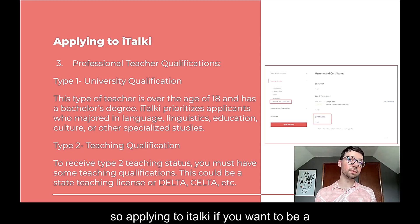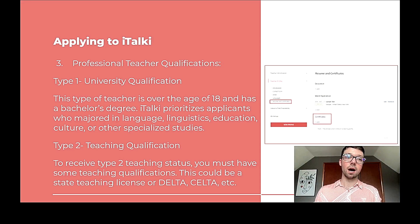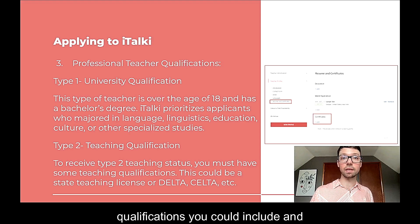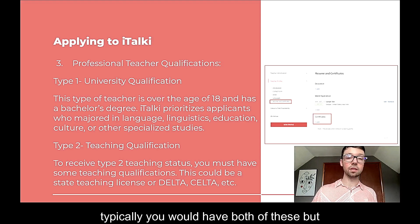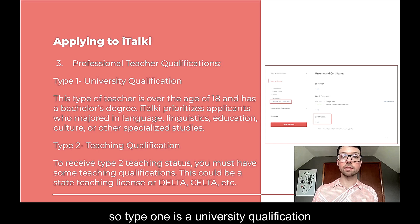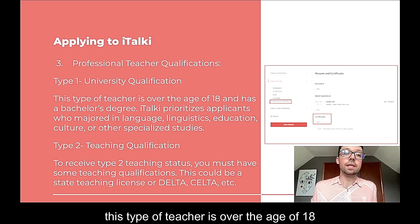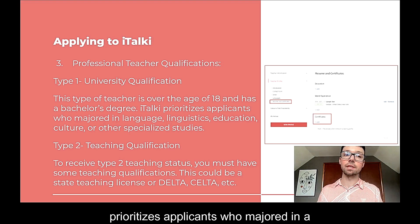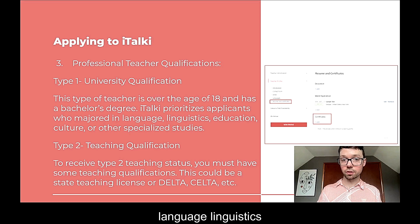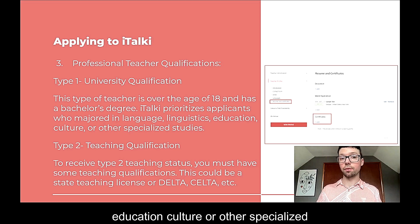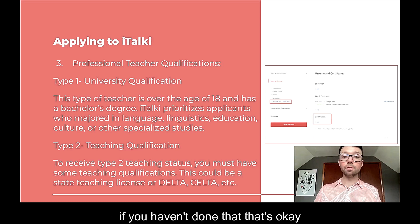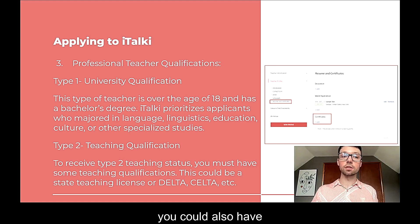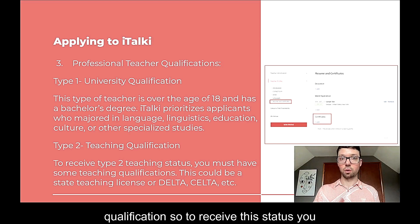If you want to be a professional teacher, there are two types of qualifications you can include — and typically you would have both. Type one is a university qualification: you're over 18 with a bachelor's degree. iTalki prioritizes applicants who majored in a language, linguistics, education, culture, or other specialized studies. If you haven't done that, that's OK. You could also have a teaching qualification: a state teaching license, CELTA, DELTA, TESOL, or TEFL certificate. You need to have a stable internet connection, and even if you get accepted to iTalki, that's just the start — not your gateway to success.